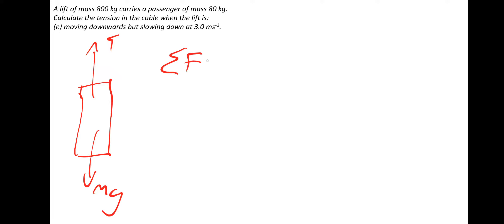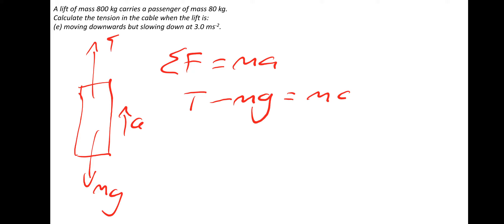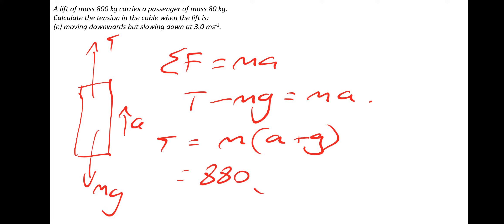Last lift question: moving downwards but slowing down at 3 m/s². The acceleration is therefore upwards. Tension acts up, weight acts down. Taking up as positive: T − mg = ma (positive, because acceleration is upward). So T = m(a + g) = 880 × (3 + 9.81) = 11,273 newtons.